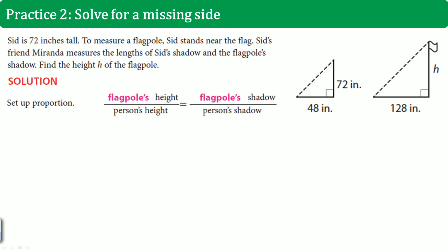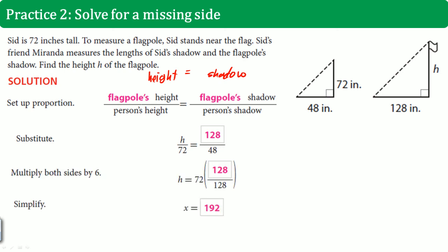Here's the solution. You would set up the proportion. Here, they compare the height and the height. So what they did is they went height was one ratio, and they did it over the shadow here. So height is equal to shadow. So the height of the flagpole was h, the person's height was 72. So they went h over 72 is equal to flagpole's shadow, which is 128, divided by the person's shadow, which is 48. Cross multiply, then divide. You get x equals to 92. So we can say that the flagpole is 192 inches tall, because that is the unit in the problem.